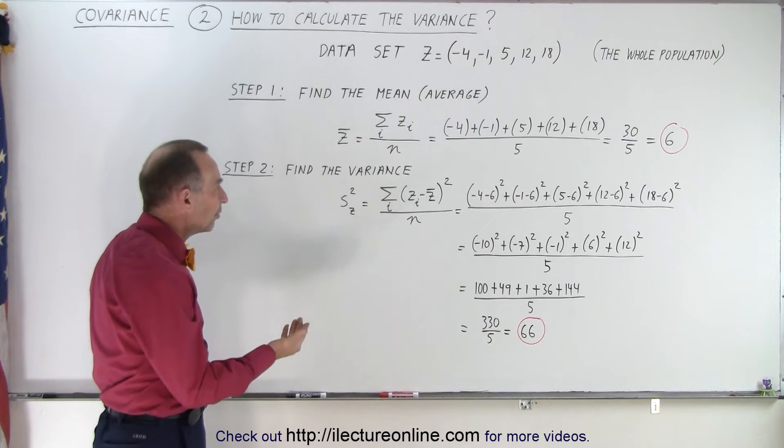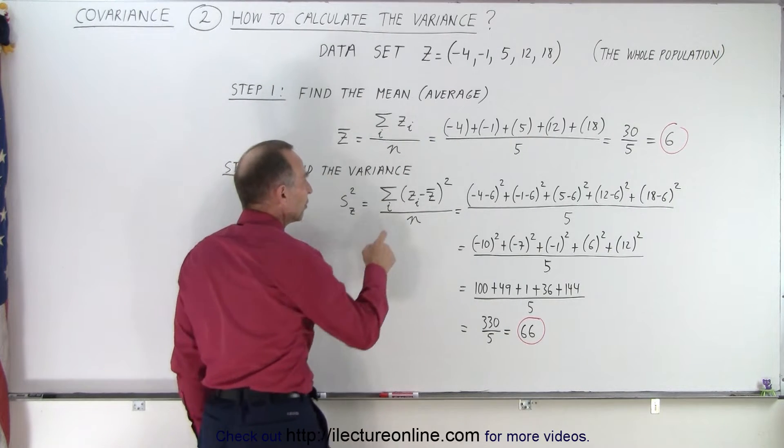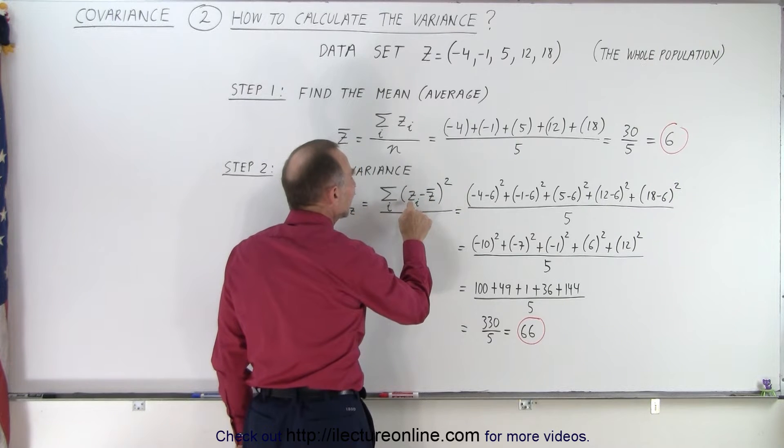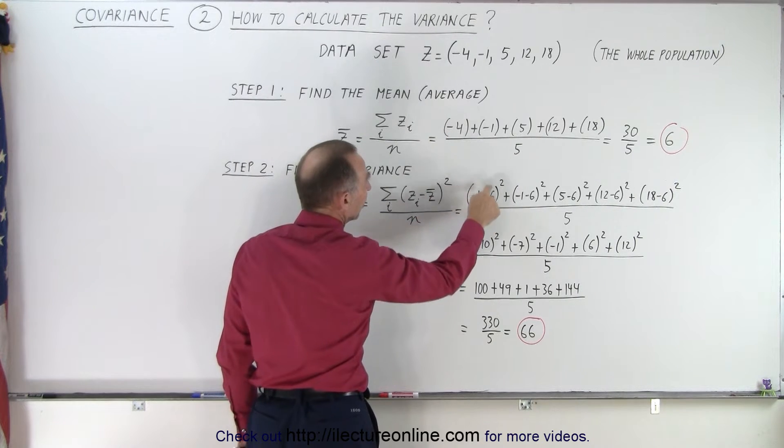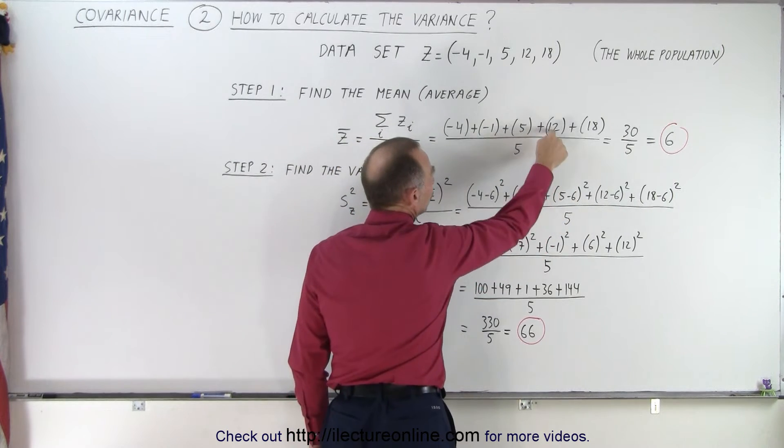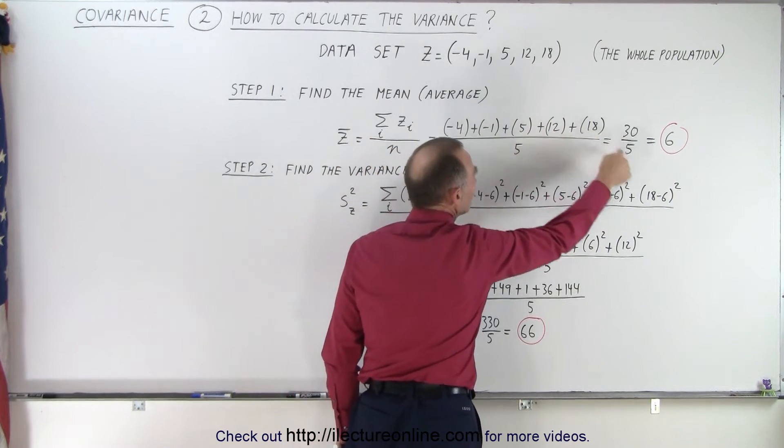Now how do we calculate the variance? Well, notice what we do is we sum up the difference squared of each of the five numbers, and we subtract from each one of those the average number. So we have minus 4 minus 6, minus 1 minus 6, 5 minus 6, 12 minus 6, and 18 minus 6.